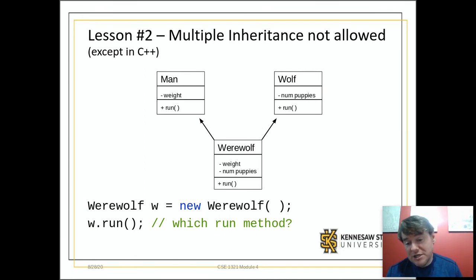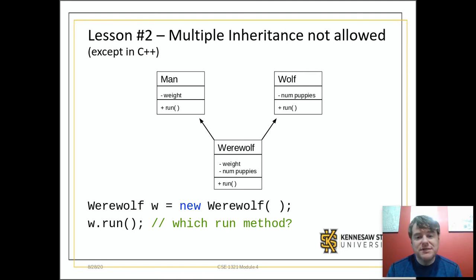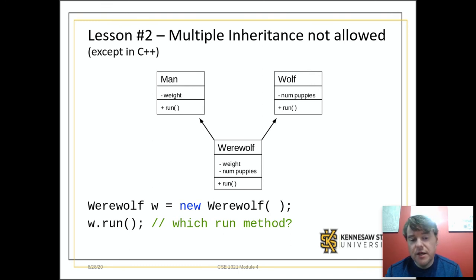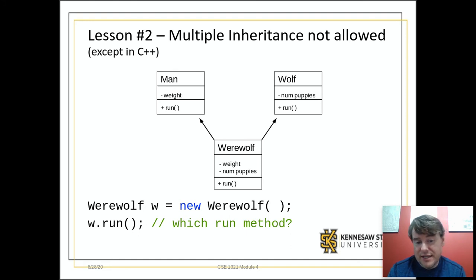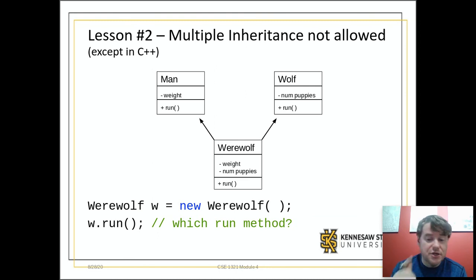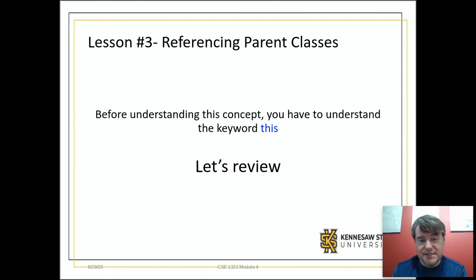C# and Java do not allow you to inherit from two different parents — you can only inherit from one parent. C++ does allow multiple inheritance, but that's a very specific thing to C++. In C# and Java, you're only inheriting from one parent, and the syntax is the colon or the extends keyword.